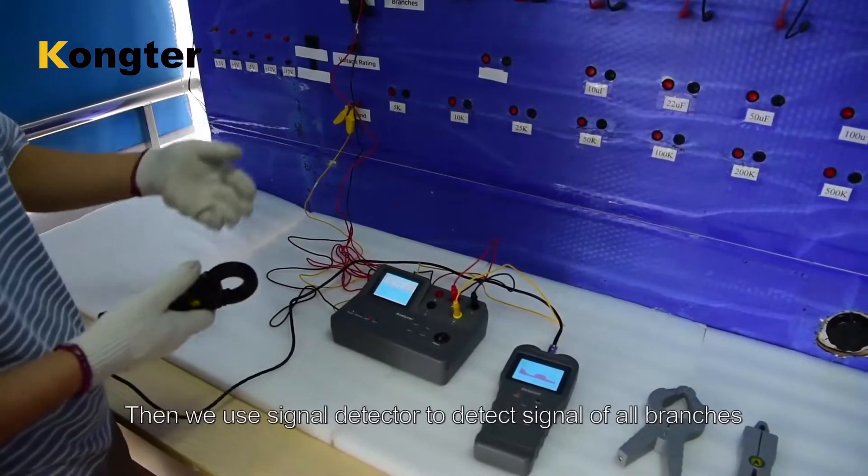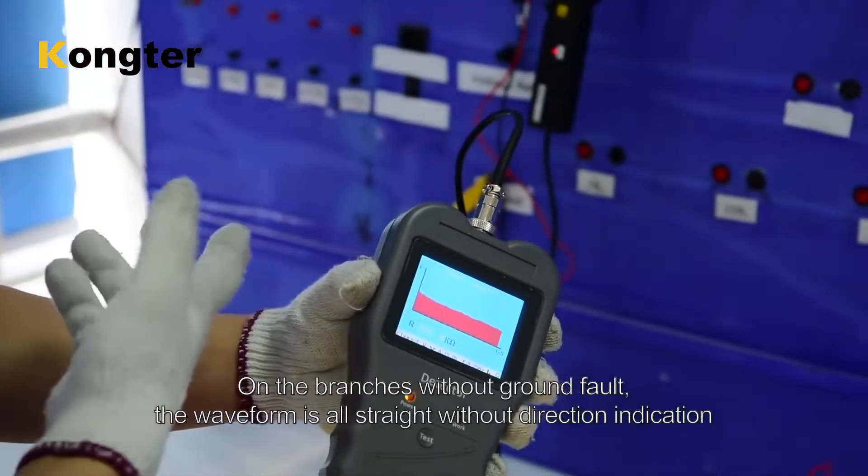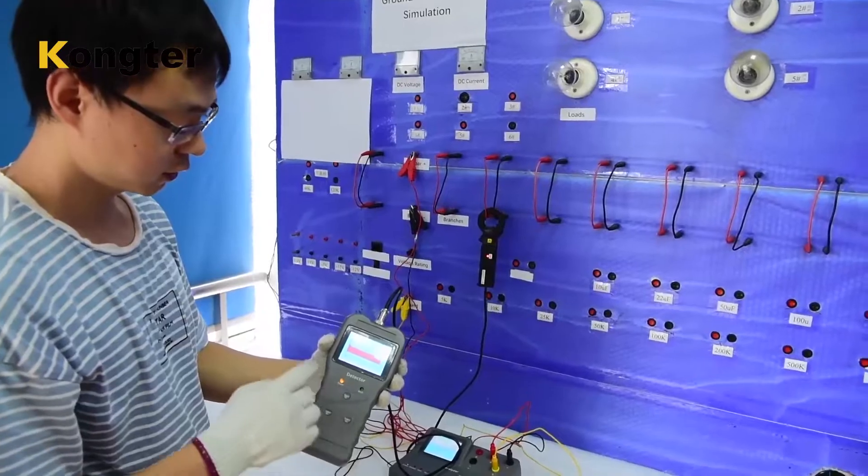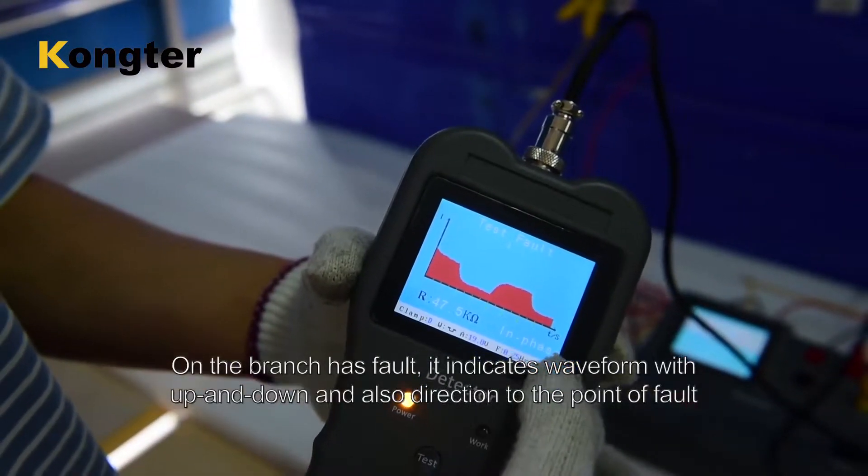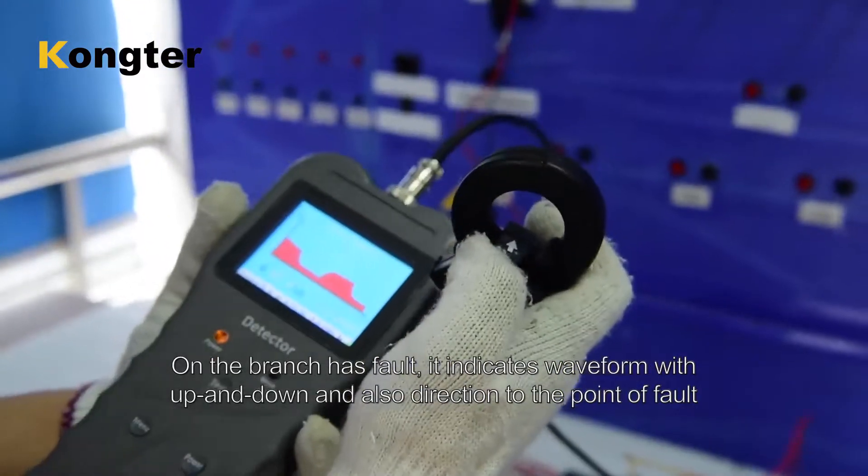Then we use signal detector to detect signal of all branches. On the branches without ground fault, the waveform is all straight without direction indication. On the branch with fault, it indicates waveform with up and down, and also direction to the point of fault.